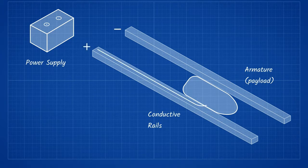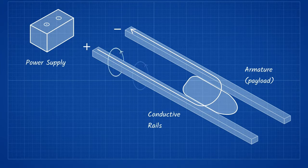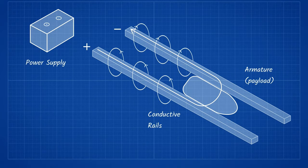The current flows from the positive terminal through the rail, across the conductive armature and projectile, and into the other rail. Due to the direction of the current, the resulting magnetic field is vertical between the two rails. Because the current is traveling through the armature perpendicular to the magnetic field vector, we get a Lorentz force produced, which is perpendicular to both the rails and the magnetic field.